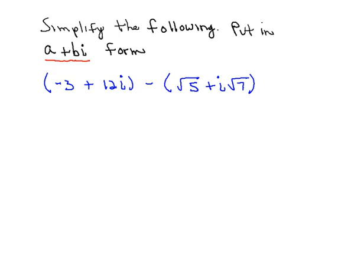So what we need to do is rewrite the first number, negative 3 plus 12i, and distribute the negative sign through the parentheses of the second complex number. So we'll then have minus the square root of 5, minus i times the square root of 7.